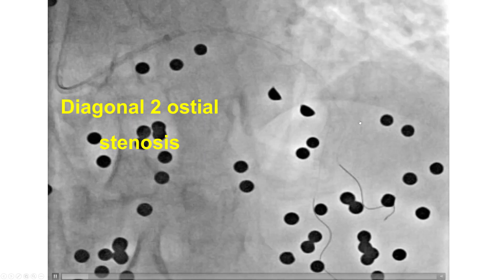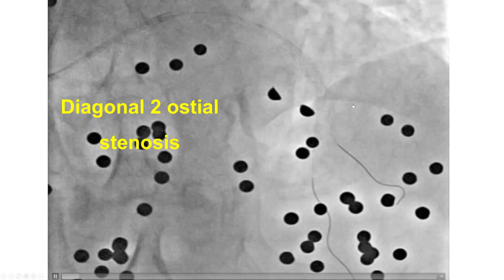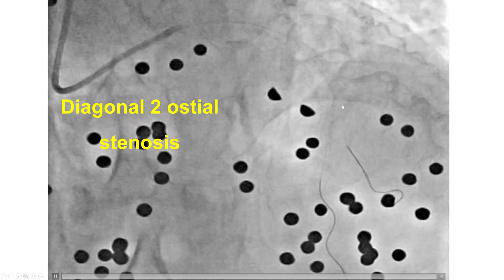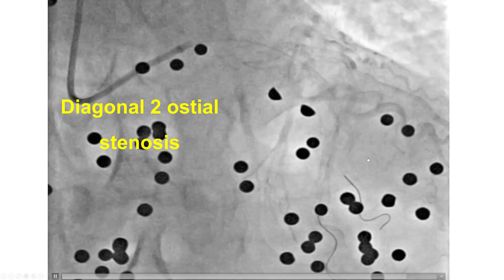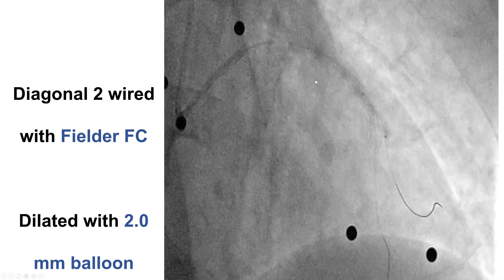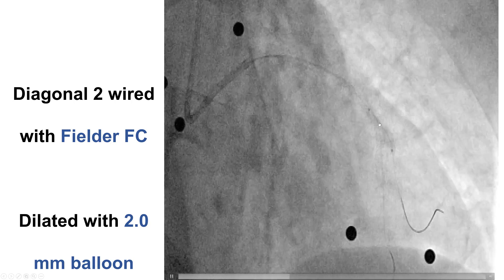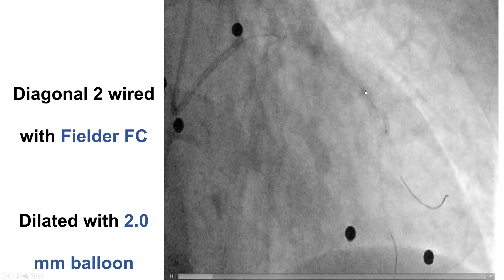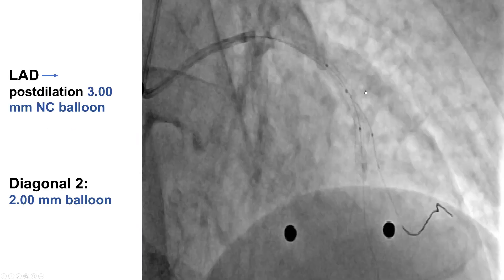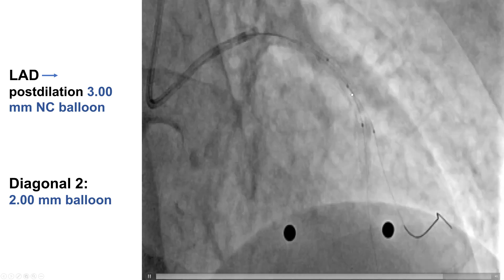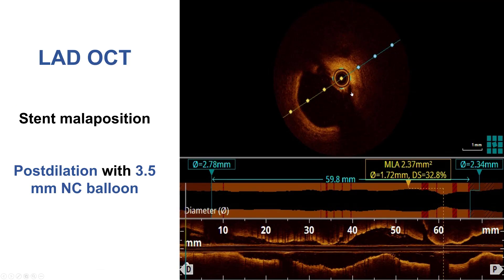After stenting, there was indeed some ostial lesion created. Sometimes one can do FFR of those lesions; however, this was significant enough by angiogram, so we decided to treat it. We rewired using the original jailed wire as a marker and used a second wire to rewire through the struts of the placed stent. We used a polymer-jacketed wire and dilated the diagonal with a 2.0 mm balloon, then performed a kissing balloon inflation with a 3.0 mm balloon in the LAD and a 2.0 mm balloon into the diagonal branch. This gave a nice result.